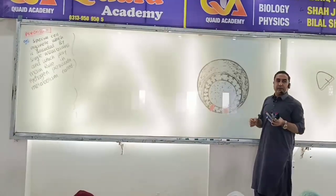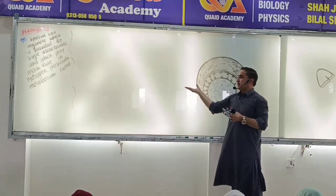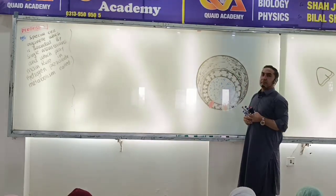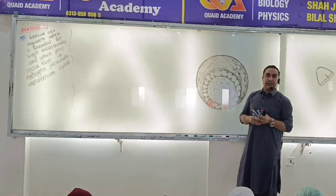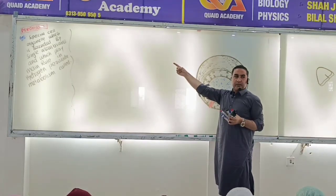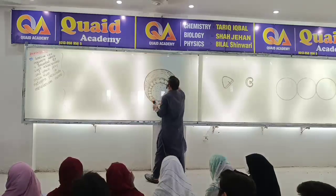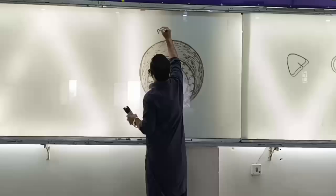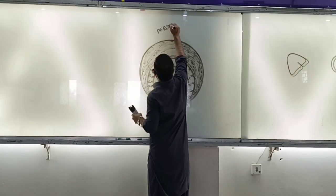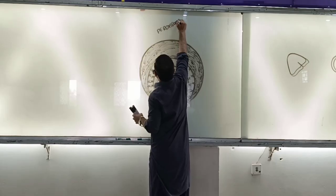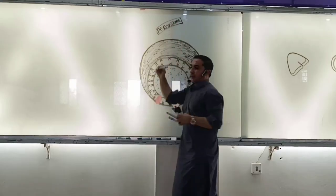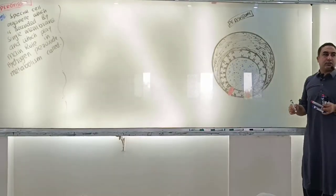The peroxisome plays a role in hydrogen peroxide metabolism — it provides proof of hydrogen peroxide breakdown. It is also associated with oxygen and is a special cell organelle shown by its oxygen-related functions.